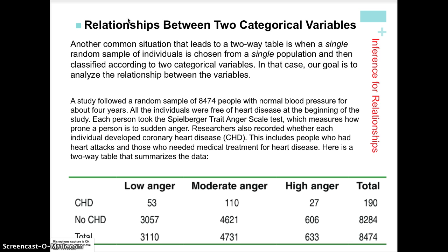This example is on page 713 and is associated with heart disease and blood pressure. What we're looking at is the presence or absence of coronary heart disease and whether it relates to anger levels based on a Spielberger anger test. We're trying to find if there is a relationship between these two variables.